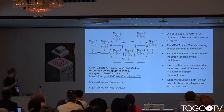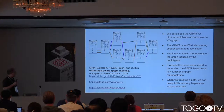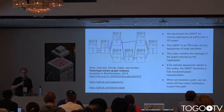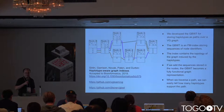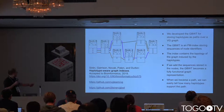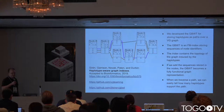If we just add the sequence stored in the nodes, the GBWT becomes a fully functional graph representation. In many applications we could replace the other graph representations with this already. And the nice thing is that when we traverse a path in the graph, we can easily tell how many haplotypes support that path.